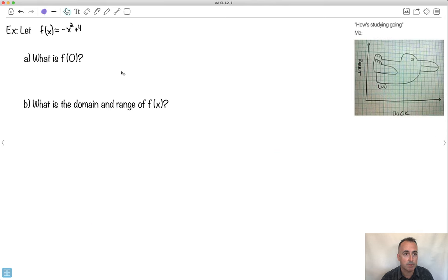Let's do another question just to be sure we have it. And by the way, I love this one. How's studying going? Duck, rabbit. If you look at it like this, it looks like a duck. If you turn your head, it looks like a rabbit. That's so good. Whoever did this is a genius.